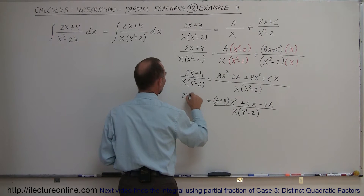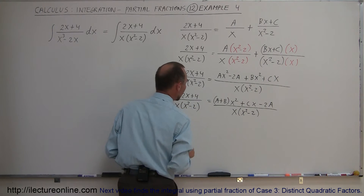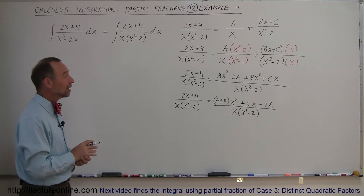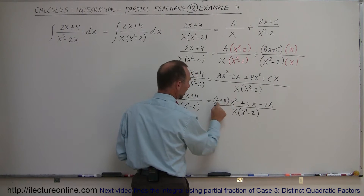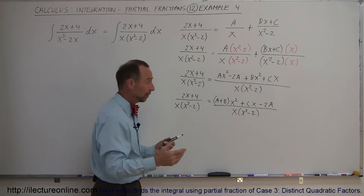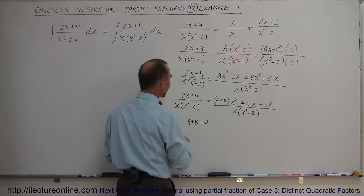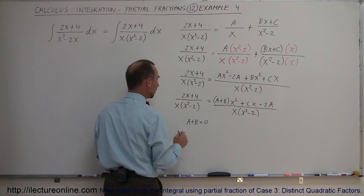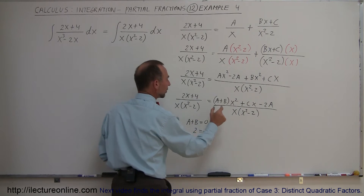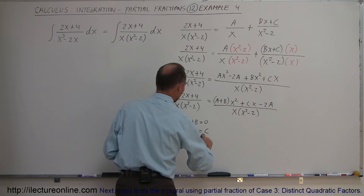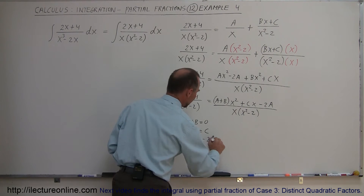The left side is 2x plus 4 divided by x times x squared minus 2. Now we can figure out what a, b, and c are. There is no x squared term on the left side, so a plus b must equal 0. The x terms give us c equals 2. The constant terms give us 4 equals negative 2a.